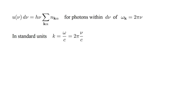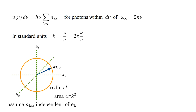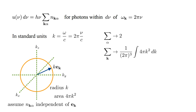In standard units, k, the magnitude of the wave vector, is omega over c, which is two-pi-nu over c. In k-space, the set of all wave vectors with a given magnitude forms a sphere of radius k and area four-pi k-squared. We assume the occupation number N-k-alpha is independent of the direction of propagation. There are two polarizations, so that summation results in a factor of two. The summation over k-vectors becomes one over two-pi-cubed times the integral over all k-magnitudes of four-pi k-squared.